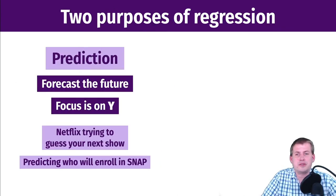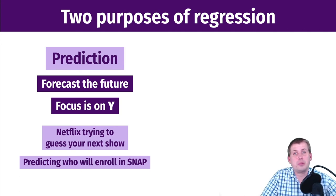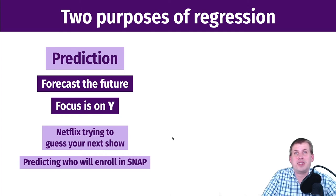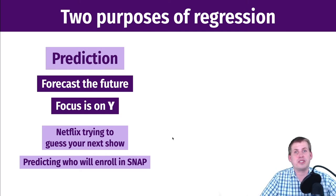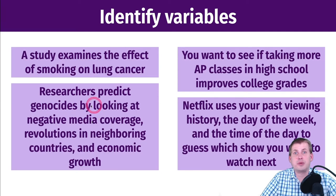With regression there are actually two purposes, and this confuses people. In the prediction world, people will say 'correlation is not causation,' and that's true — if you're running a predictive model, you are not interested in causal effects. The main focus is on the outcome; you're trying to forecast the future. For example, Netflix trying to guess your next show doesn't care about the causal effect of time of day on show choice — they just care about getting the closest match. Predicting who will enroll in SNAP is a predictive question, not a causal one.